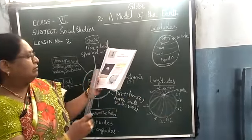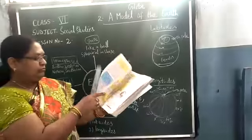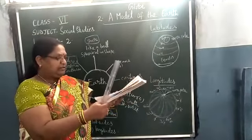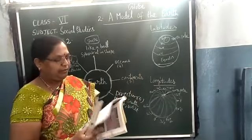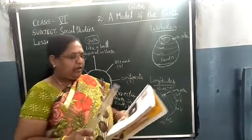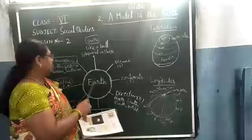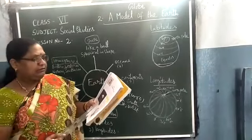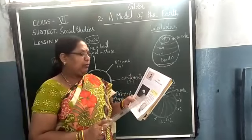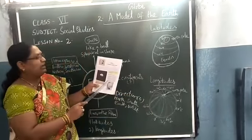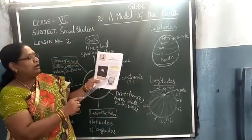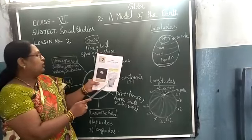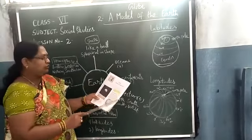Page number 9. As I already told you, the earth is like a sphere. Globe is also a model of the earth. In this we can know the land, water, continents, oceans, etc.